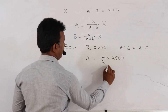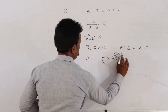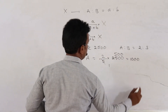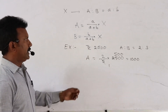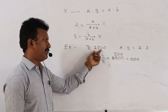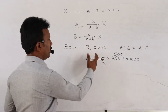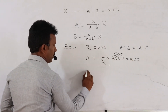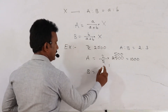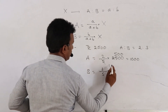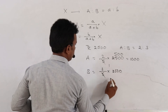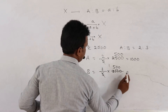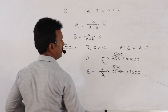So 5 divides into 2500 giving 500, and 2 into 500 equals 1000 rupees. The share of A is 1000 rupees. The share of B is 3 by 5 into 2500, which equals 1500 rupees. The total adds up to 2500.